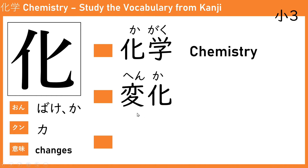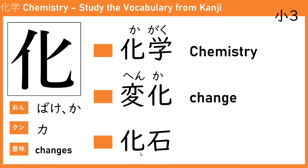The next word is 変化 (hen-ka), which means changes — two kanji for change combined means changes. For example, 化学変化 means chemistry changes or chemistry reactions. Next is 化石 (ka-seki). 化 means changes, 石 means rock, so 化石 means fossil — old living things like dinosaurs that have turned into rock.